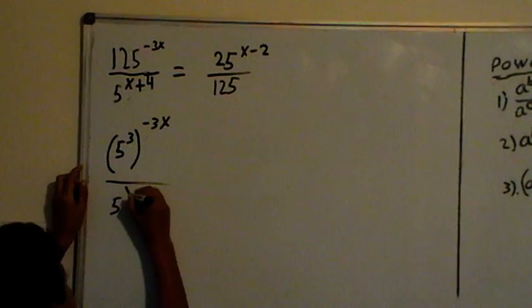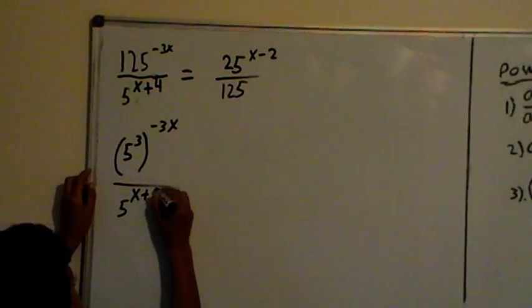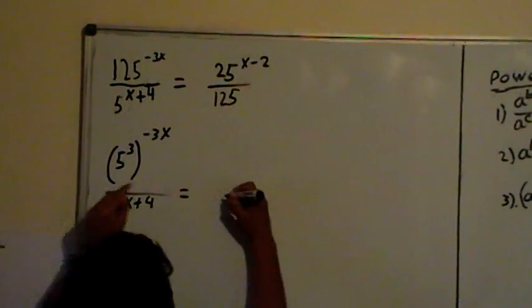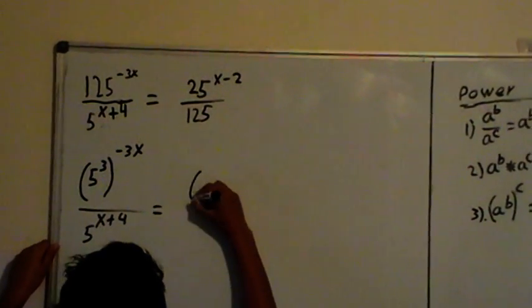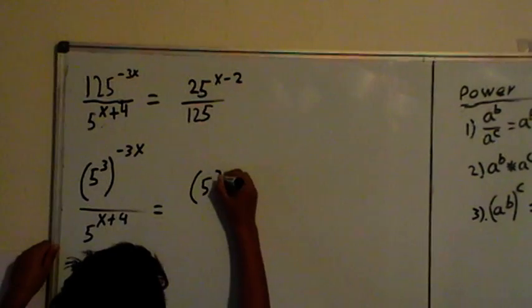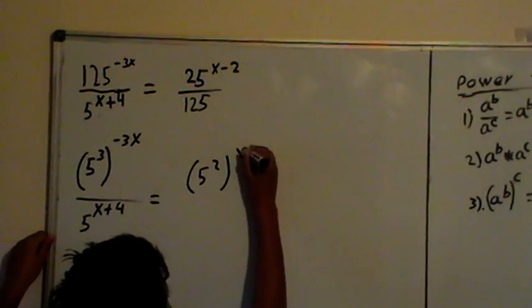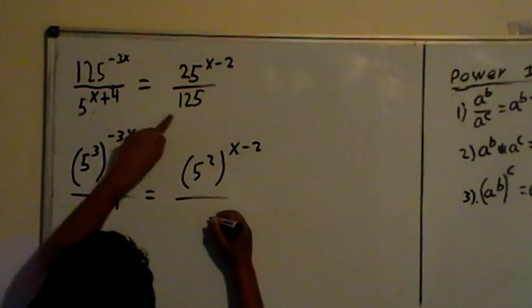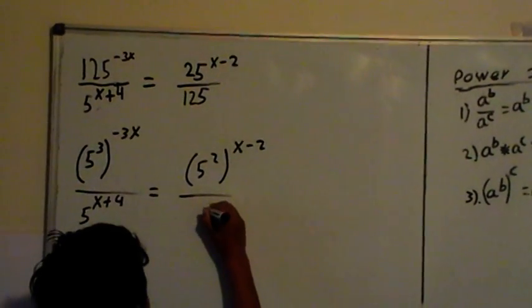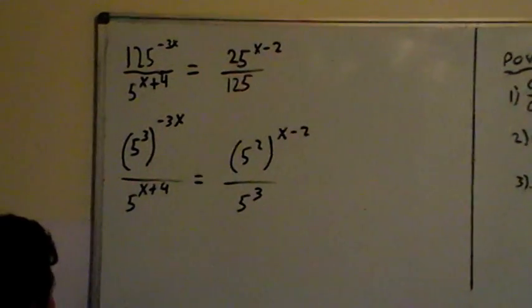So x plus 4 equals 25, which is 5 power 2, times x minus 2 over 125, which is just 5 power 3.